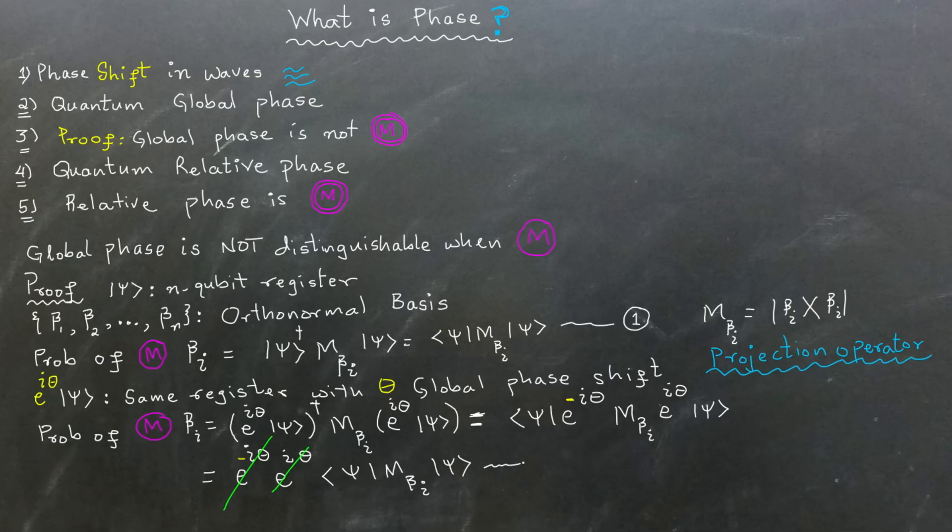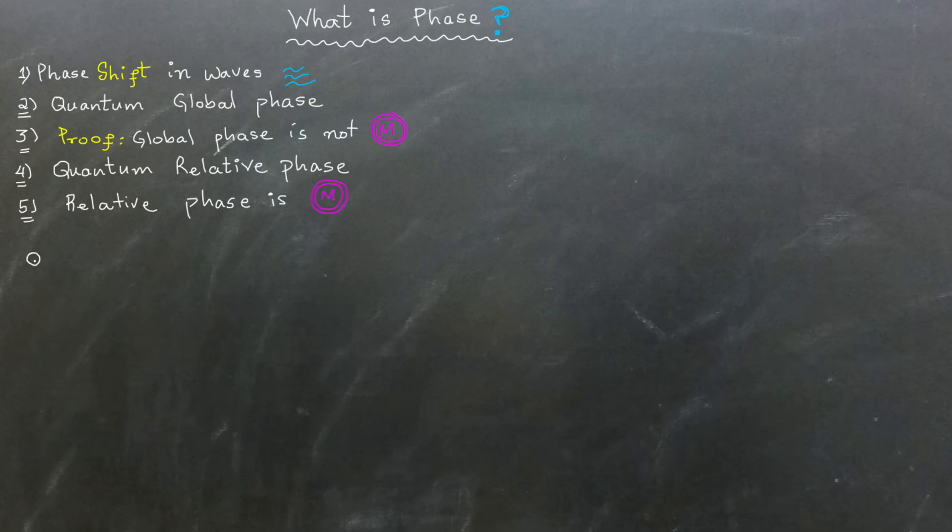They will cancel each other out. The resultant measurement result will be the same as it was for ket psi prior to the global phase shift. This proves that global phase does not change the measurement outcome of a quantum state.